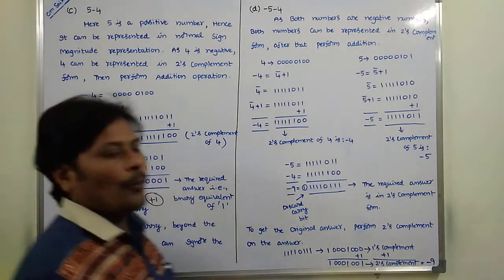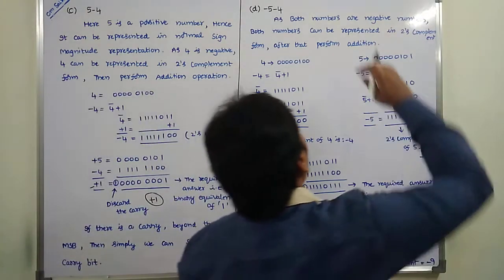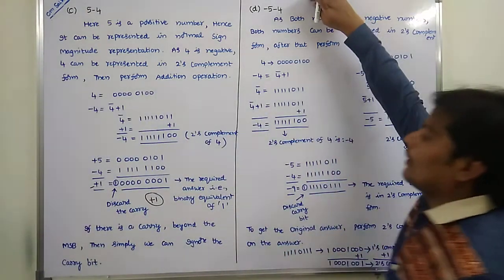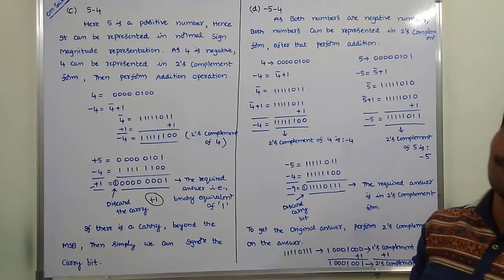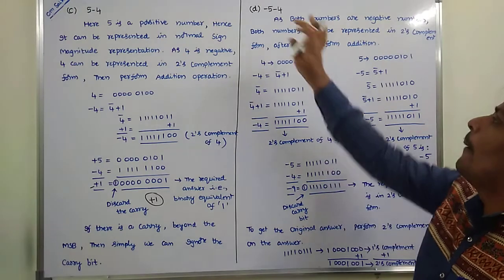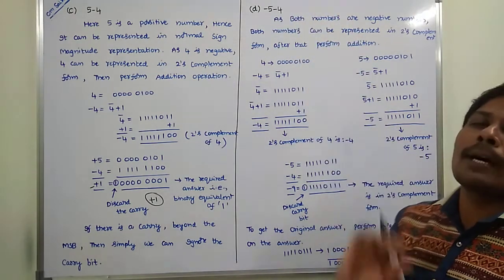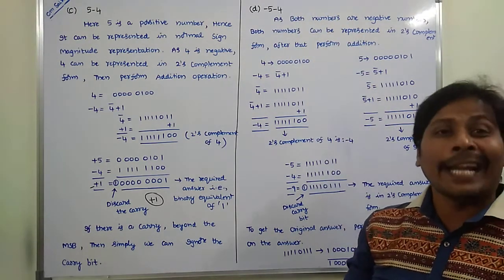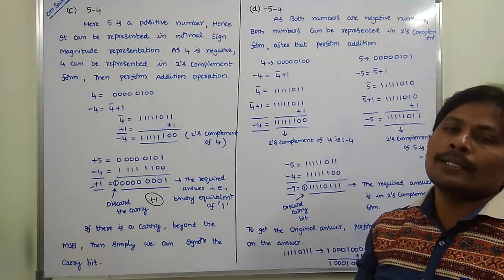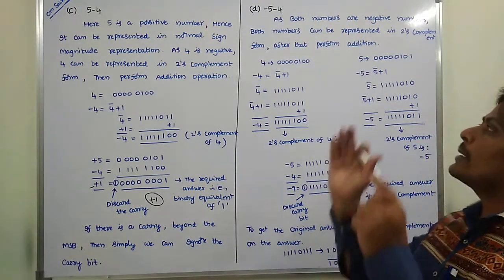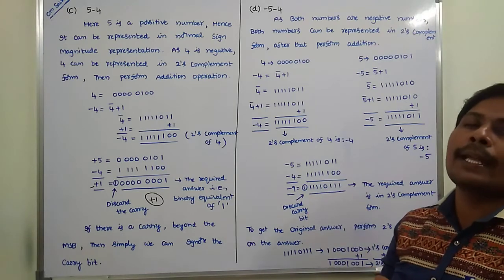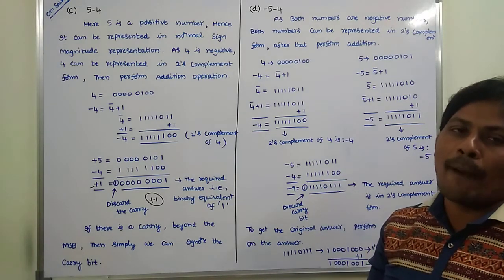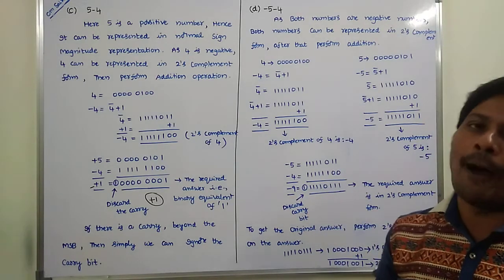Now we go to the fourth case: minus 5 minus 4. Here both numbers are negative numbers, so both numbers can be represented in two's complement form.